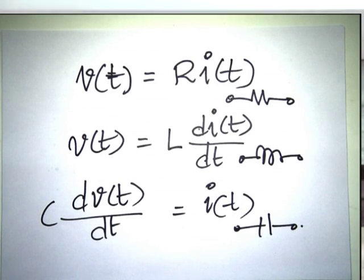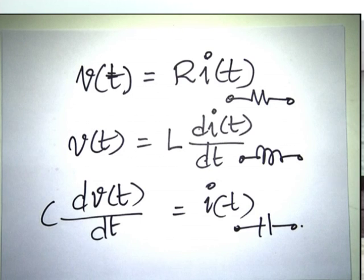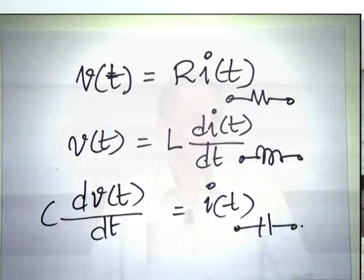One beautiful property of the three basic elements in electrical circuits — resistance, inductance, and capacitance — is that they obey this property. If given a sinusoidal current input, the voltage is also sinusoidal at the same frequency, and vice versa. This is because the voltage-current descriptions are: for resistance V(t) = R·I(t); for inductance V(t) = L·dI/dt; and for capacitance C·dV(t)/dt = I(t).